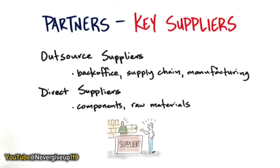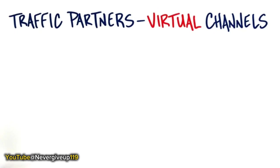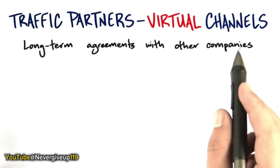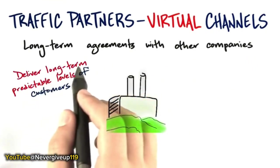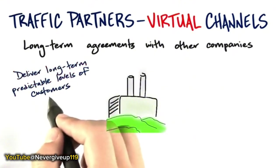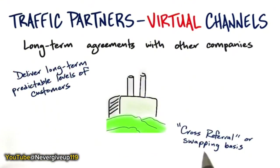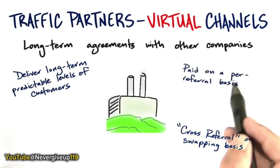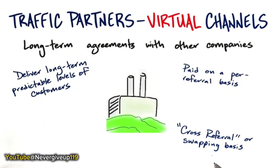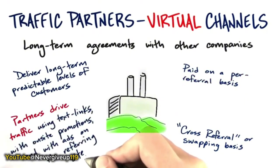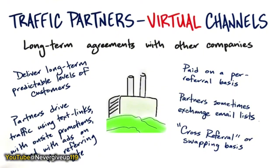As your startup grows, start looking for partners where you're more than just a checklist, and try to establish long and lasting relationships. In the web over the last five to ten years, we've established a new type of partner: traffic partners. A traffic partner involves long-term agreements with other companies that deliver predictable levels of customers to your website through cross-referral or swapping deals, paid on a per-referral basis. Our traffic partners drive traffic using text links, on-site promotions, and ads, and sometimes we exchange email lists and other data. If you're on the web, traffic partners are a virtual channel partner that simply doesn't exist in the physical world.